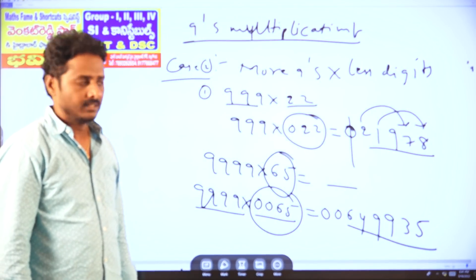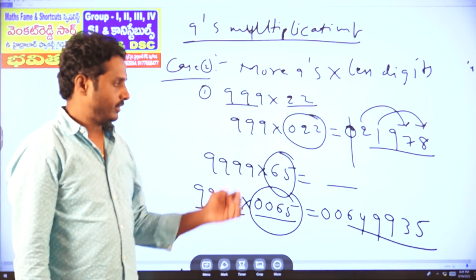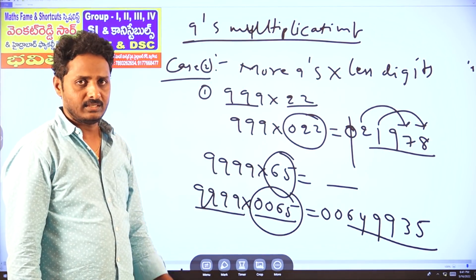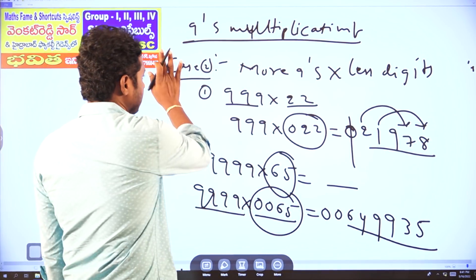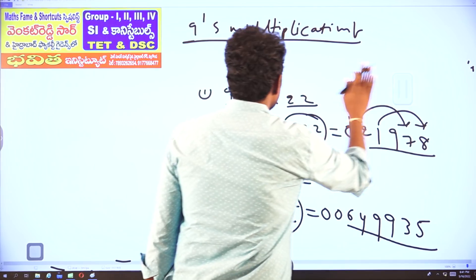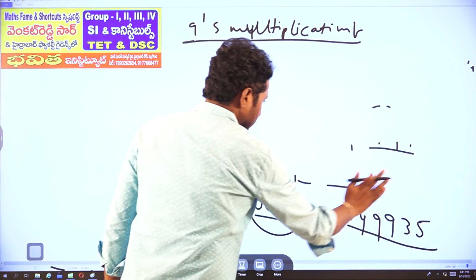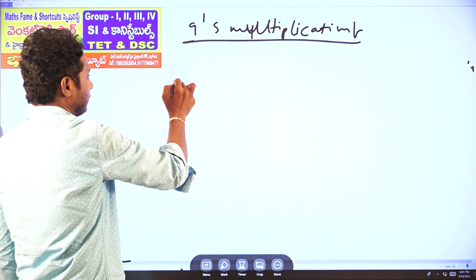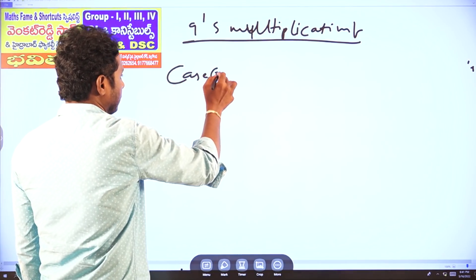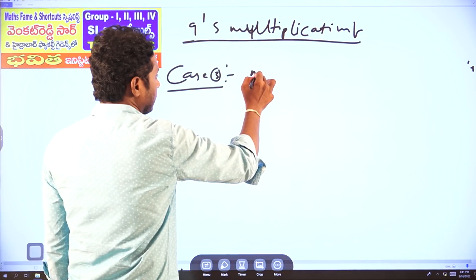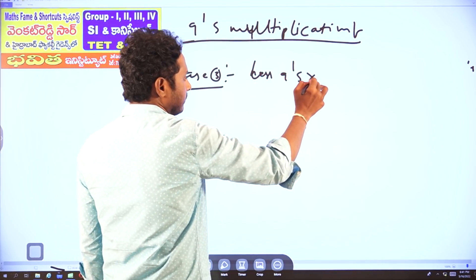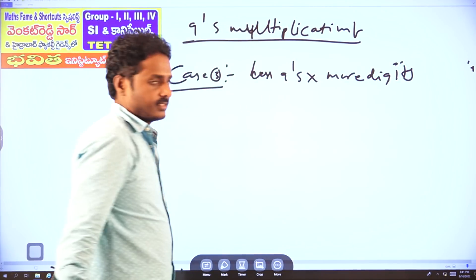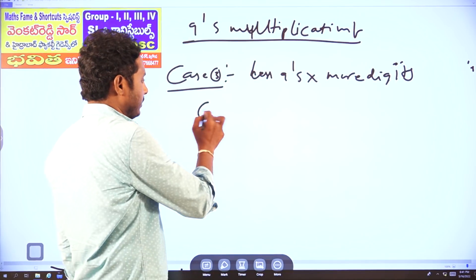So the answer is 649935. In Case 2 — more 9s, fewer digits — to balance, add leading zeros before computing the decrease and complements. Now next is Case 3, the last case.